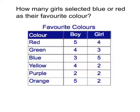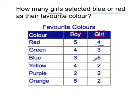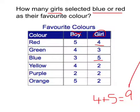I hope you paused the video as we are going to go through this answer. The key things in this question are: how many girls selected blue or red as their favourite colour? So we're not going to look at boys — we're going to be looking at girls, so we can ignore boys. We want to know red: there's four. And blue: there's five. So four plus five equals nine. So if you got nine, mark that correct and you can go on to Mathletics.